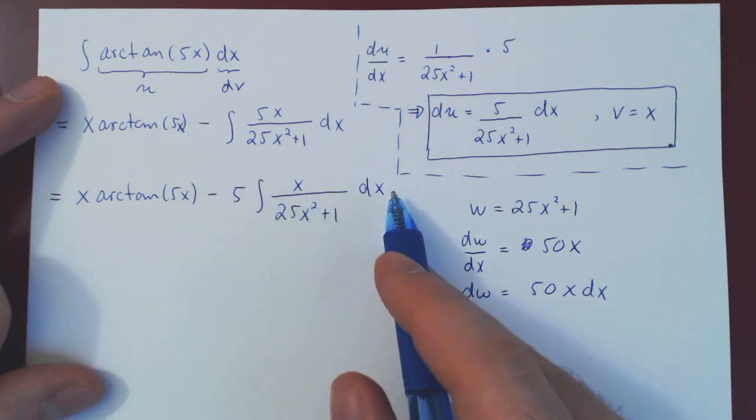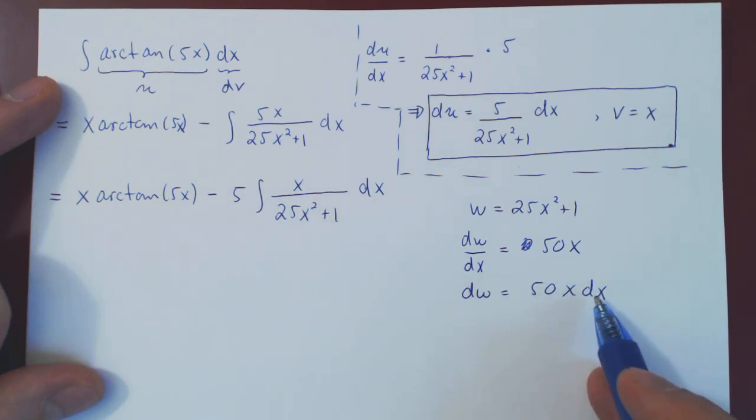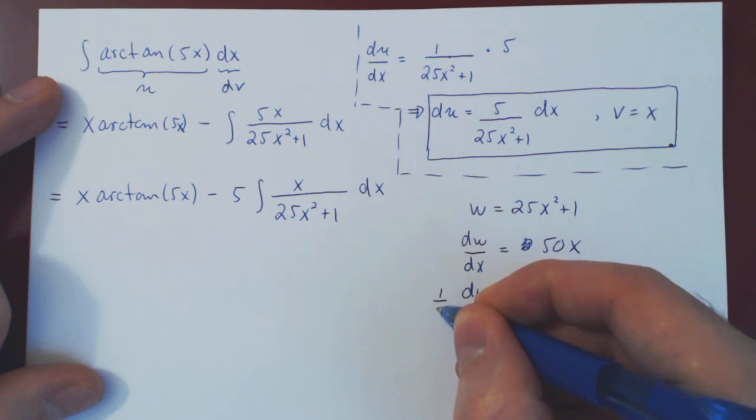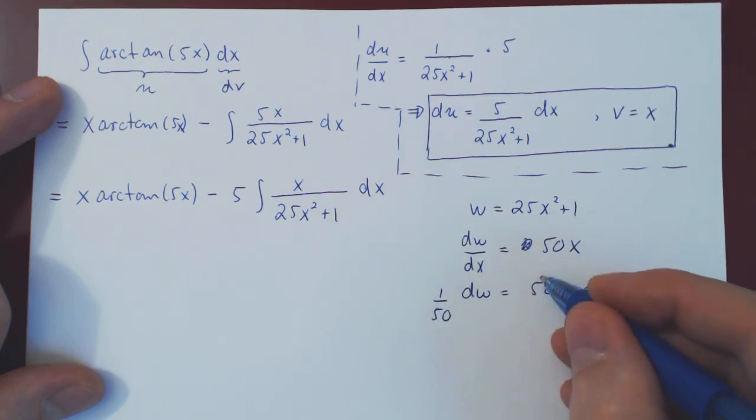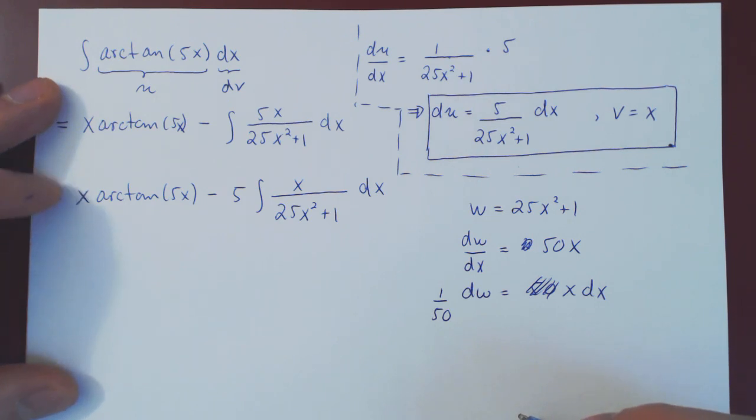Our numerator is x dx. So isolate x dx by dividing by 50. So 1 over 50 dw is x dx. And now we're good to go.